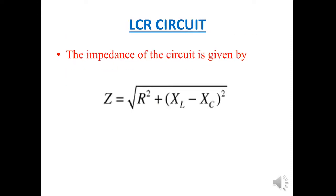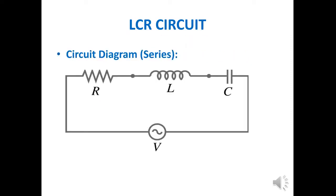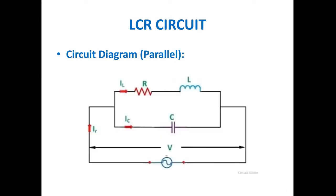The impedance of the circuit is given by Z = √(R² + (XL − Xc)²). This is the circuit diagram for the LCR circuit under series connection. This is the circuit diagram for the LCR circuit under parallel connection.